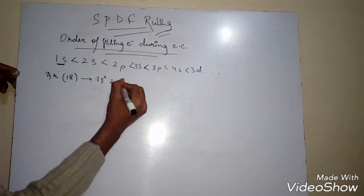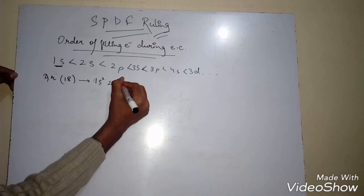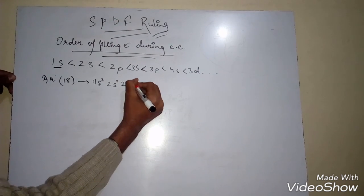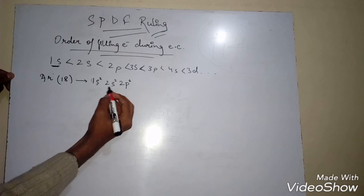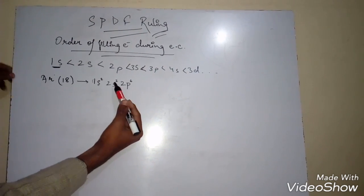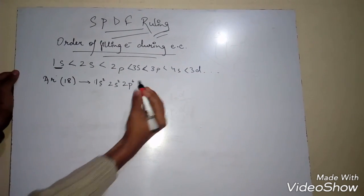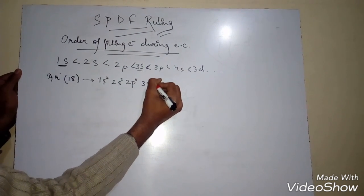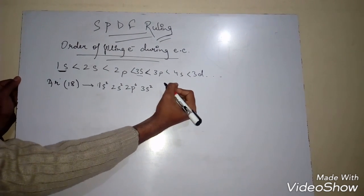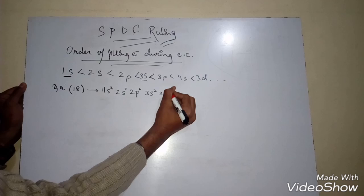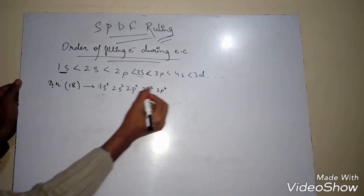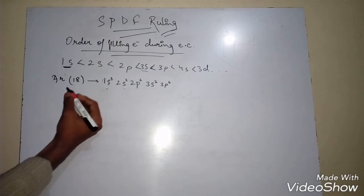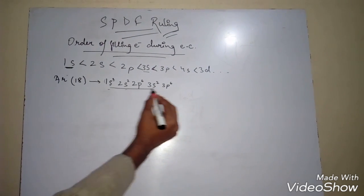Let's take the example of Argon with atomic number 18. Following the order: 1S² (two electrons), then 2S² (two more, total four), then 2P⁶ (six more, total ten), then 3S² (two more, total twelve), then 3P⁶ (six more, total eighteen). The sum 2+2+6+2+6 equals 18, confirming this is the correct electronic configuration of Argon by SPDF ruling.